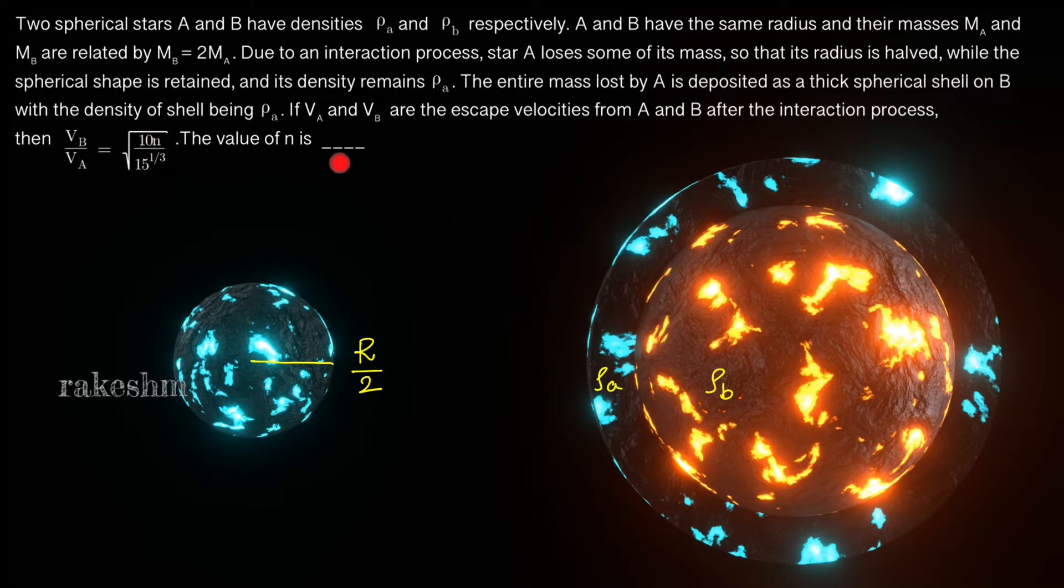So here we need to find the ratio of escape velocities from both these stars. The ratio of escape velocities is given by √(M_B'/M_A') × (R_A'/R_B').